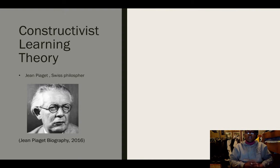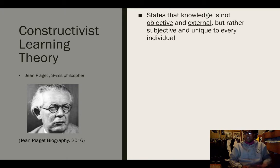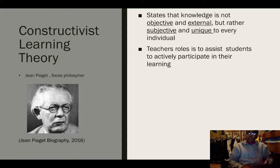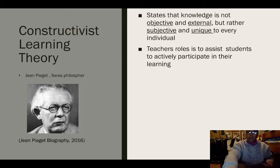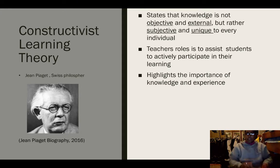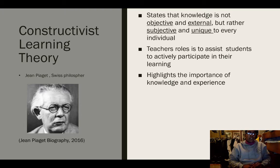Jean Piaget, a Swiss philosopher, is the person who developed the constructivist learning theory. He states that knowledge is not objective and external but rather subjective and unique to every individual. He also says that the teacher's role is to assist students to actively participate in their learning rather than just speaking to them and acting as a presenter. He highlights the importance of knowledge and experience, as each and every one of us has their own set of prior knowledge and experience, meaning each of our learning experiences will be unique as we build additional knowledge and understanding on top of what we already know.